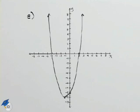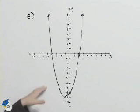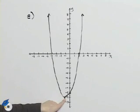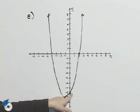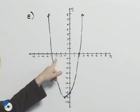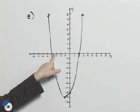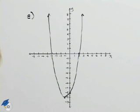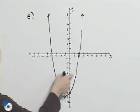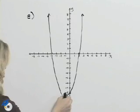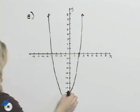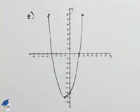Part e of this question asks us to graph this parabola. I use all the points that I found in parts a through d. I have the vertex at negative 1, negative 9, the y intercept at 0, negative 8, and the x intercepts when x is negative 4 and x is 2. I know that the parabola opens upward, so I can draw my curve then through these points. And here is my graph.